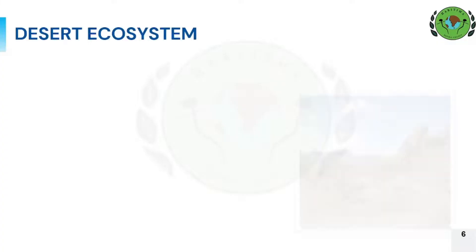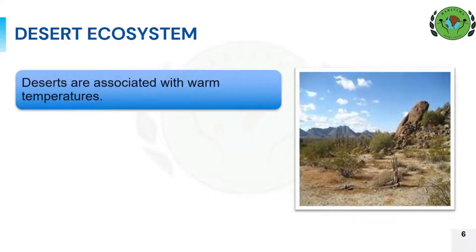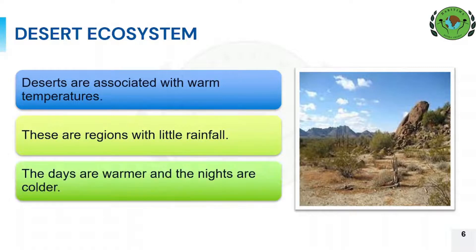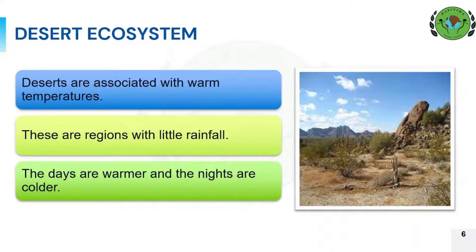The last type of terrestrial ecosystem is desert ecosystem. Deserts are associated with warm temperatures, have little rainfall, and the days are warmer while the nights are colder. Deserts and semi-arid areas are highly specialized and sensitive ecosystems that can be easily destroyed by human activities. Species in these areas can only live in this special habitat. The most typical desert landscape in India is in Rajasthan, that is the Thar desert. There are also areas covered with sparse grasses and some shrubs that grow when it rains, made up of thorny bushes and trees like Kerr and Babool.